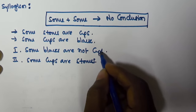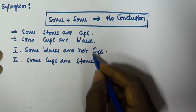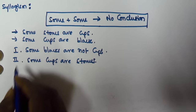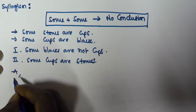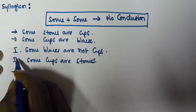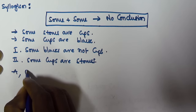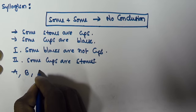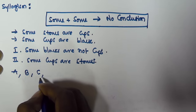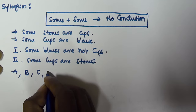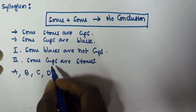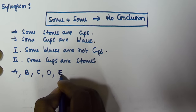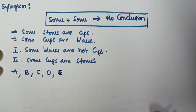Now we have to check which conclusion is true. If the first one alone is true, select option A. If the second conclusion alone is true, select option B. If either first or second is true, select C. If both are false, select D. If both are true, select E.